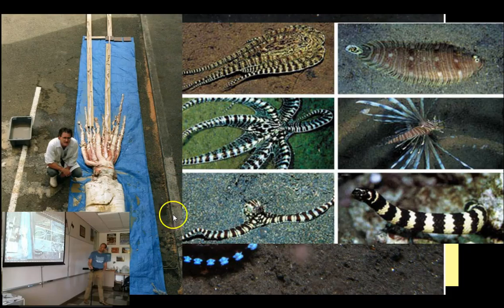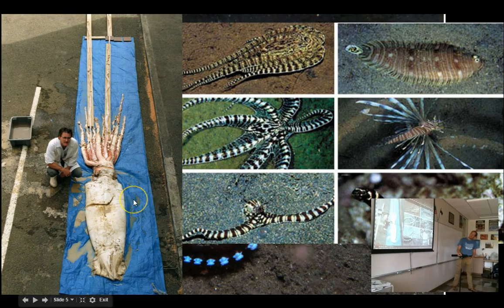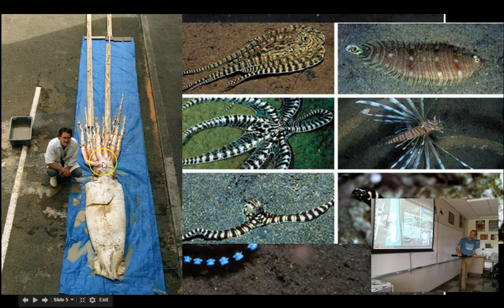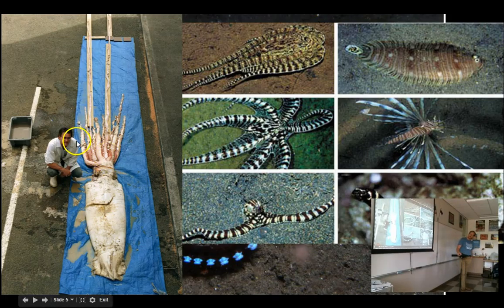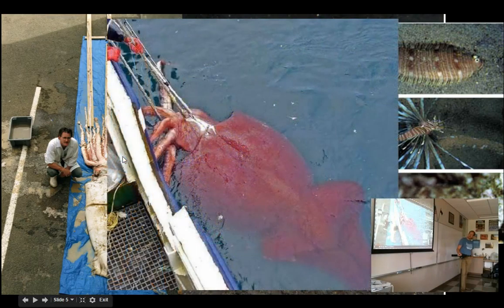Here is the giant squid — there is one species larger called the colossal squid, but the giant squid is easily 15 to 20 feet long. It is the principal food source for sperm whales. Giant squid live very deep — a mile and a half and deeper — and are only rarely seen by humans. We only find them if they are sick and have wandered near the surface, or if they get caught in researchers' deep nets dragged two miles down.